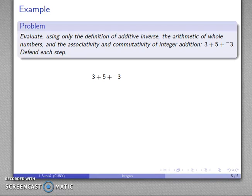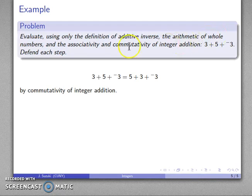So here's what I'm starting with and what I know is that integer addition is commutative. I have that as one of the rules I can use. So I can rearrange the order of integer addition. This 3 plus 5 plus additive inverse of 3 is the same as 5 plus 3 switching the order plus the additive inverse of 3.